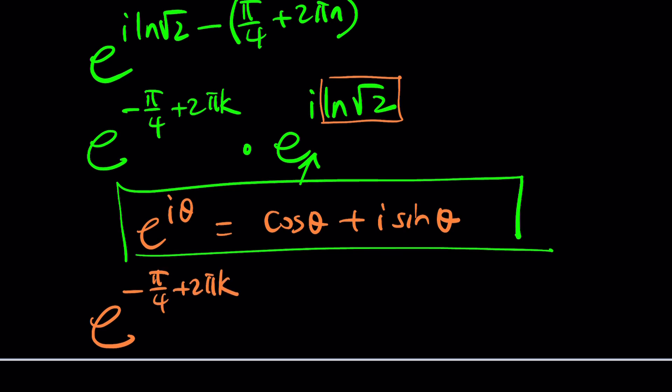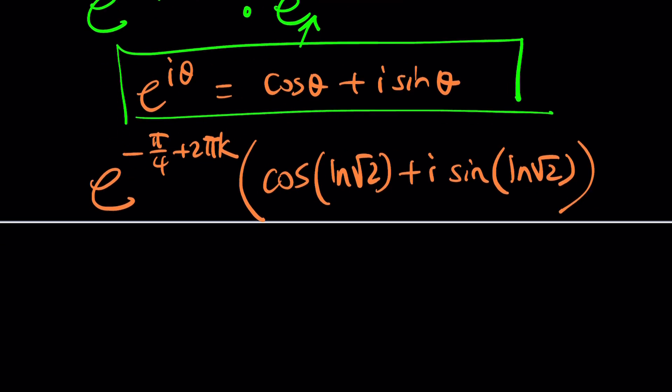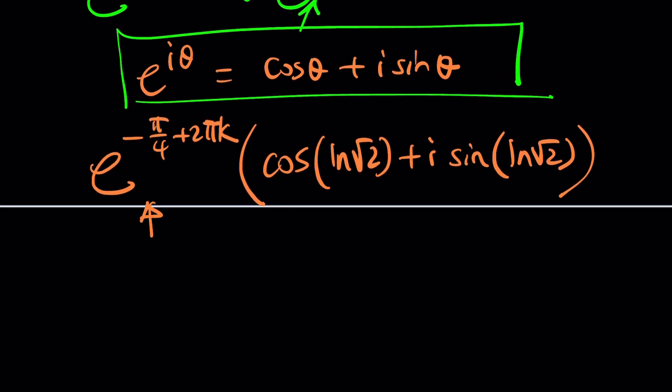Times e to the power i theta will be written as cosine of ln root 2 plus i sine of ln root 2. ln root 2 happens to be the argument here. And this is going to be our modulus. If you distribute, fine. If you don't distribute, that's also fine.